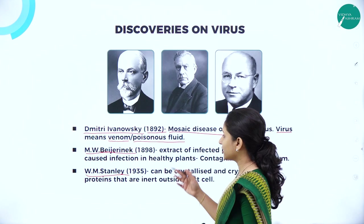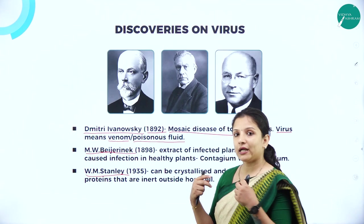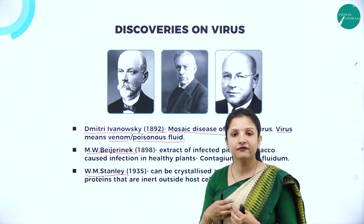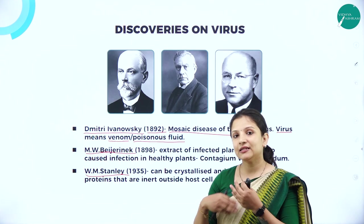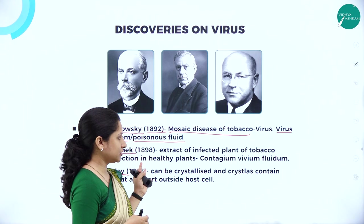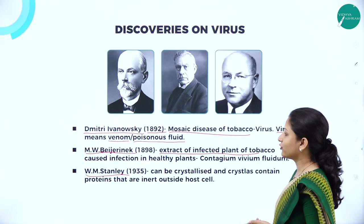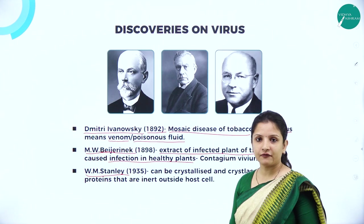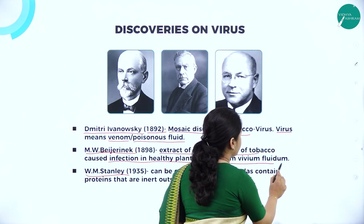M.W. Beijerinck, in the year 1898, took a diseased tobacco plant infected by the tobacco mosaic virus, crushed the leaves of that diseased plant and then sprayed it on a healthy plant. After a few days, the healthy plant also started to show symptoms of tobacco mosaic disease. He was the first person to find out that even the fluid of the virus is responsible for causing diseases. He took the extract of the infected tobacco plant and proved that when you spray it on a healthy plant, it causes infection in that plant as well. He called that extract 'contagium vivum fluidum'.